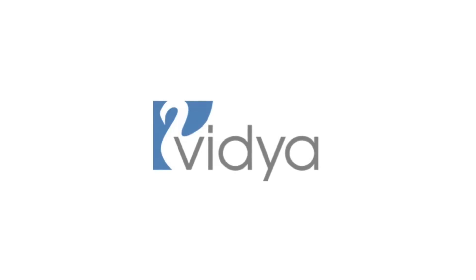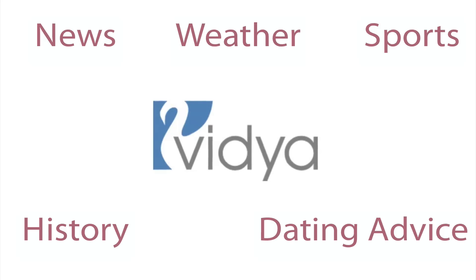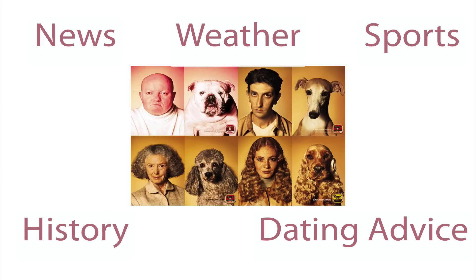You know the internet is full of information — news, weather, sports, history, dating advice, dogs that look like their owners, and on and on. We're used to looking information up ourselves and consuming it in a manual way. It turns out, though, that there are a lot of providers who distribute information we can consume in an automated way.